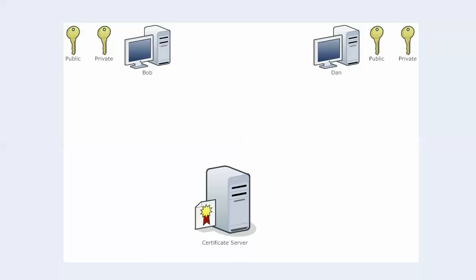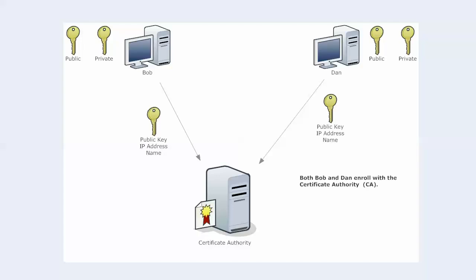Bob and Dan aren't going to just start trying to authenticate each other immediately in this particular process. What we're going to do is bring in a device called a certificate server, which in this case is our certificate authority, our CA. That, of course, is going to be made up of one or more certificate servers. What's going to happen at the beginning of this process is that both Bob and Dan are going to do what we call enrolling.